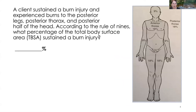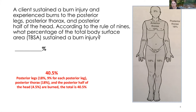Practice question: A client sustained a burn injury with burns to the posterior legs, the posterior thorax, and the posterior half of the head. What is the total body surface area burned? The answer is 40.5%. The posterior legs: each posterior leg is 9%, so both are 18%. The posterior thorax is 18%. The posterior half of the head is four and a half percent. That gives us 40.5% total.